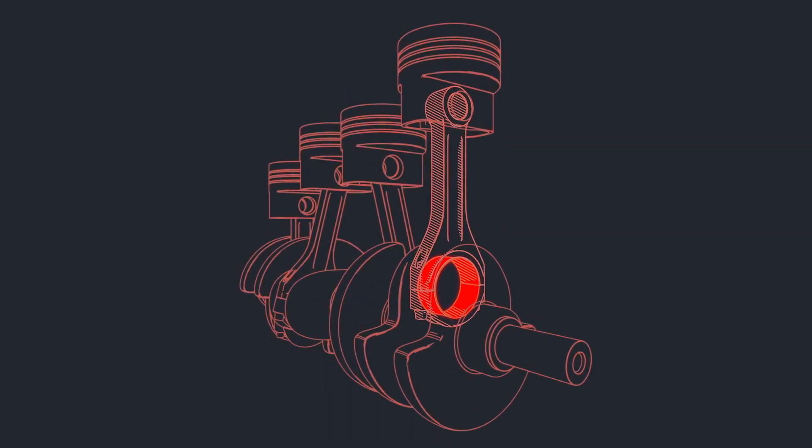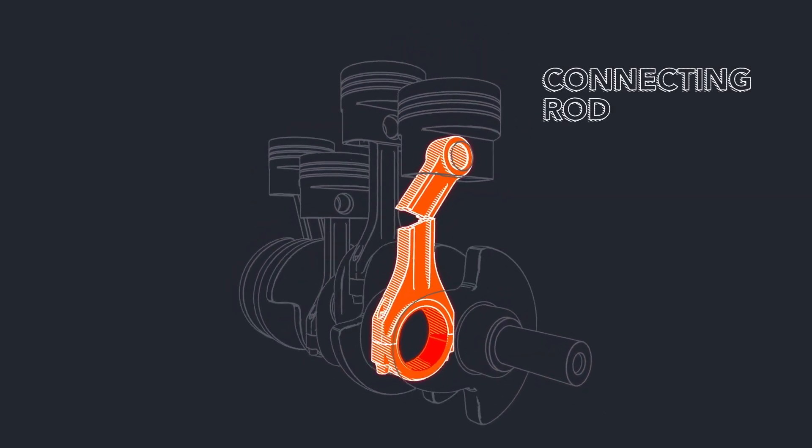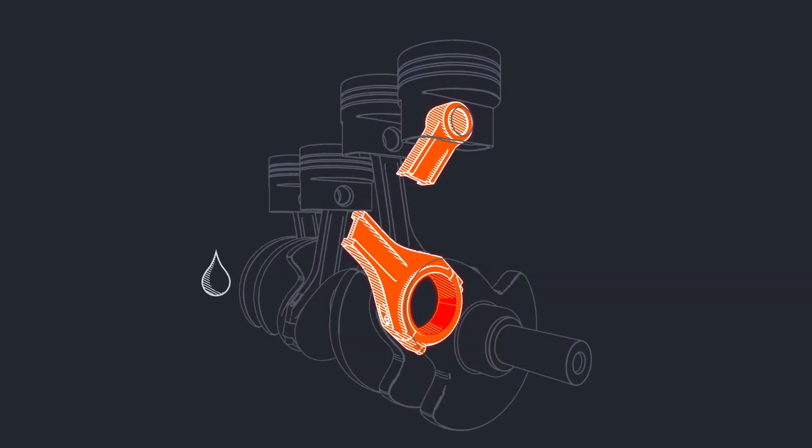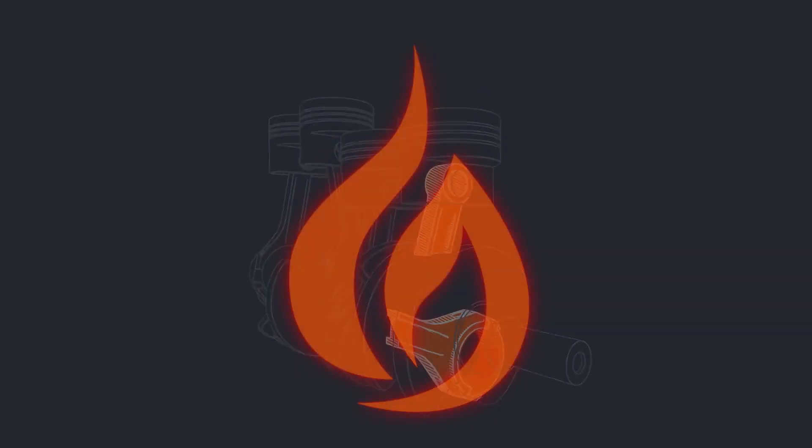In some instances, the engine stall is caused when one of the rotating components in the engine, the connecting rod, stops rotating and fractures. When a connecting rod fractures, the broken parts may damage the engine block, allowing oil to escape and contact hot engine surfaces. This can lead to a fire.